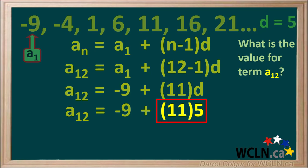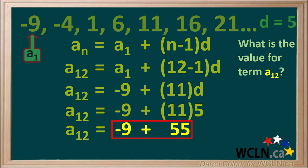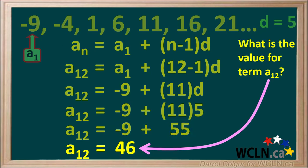11 times 5 equals 55, so now we have a12 equals negative 9 plus 55. Negative 9 plus 55 equals 46. So the value for term a12 is equal to 46.